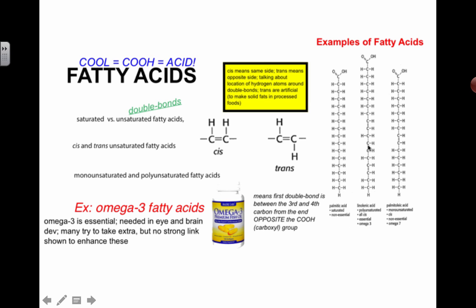This one in the middle has some double bonds — it must have double bonds because we don't see the extra H's there. So this is going to be an unsaturated fatty acid. And actually, because there's one, two, three double bonds, we could call this one a polyunsaturated fatty acid. This one on the right, you guessed it, is a monounsaturated fatty acid.